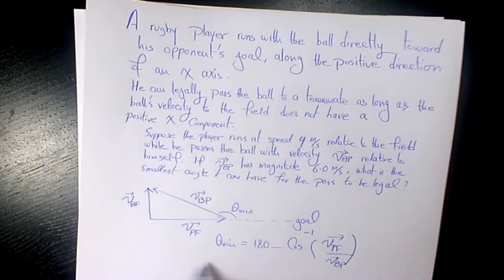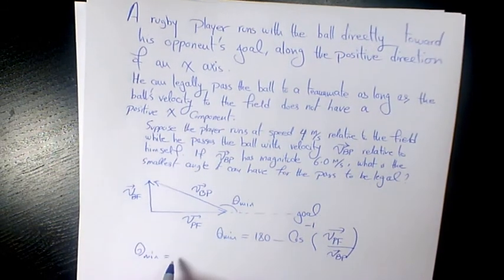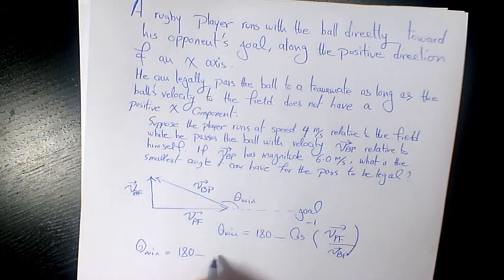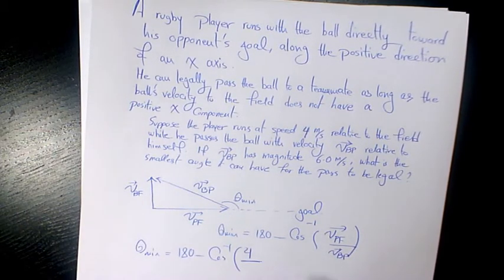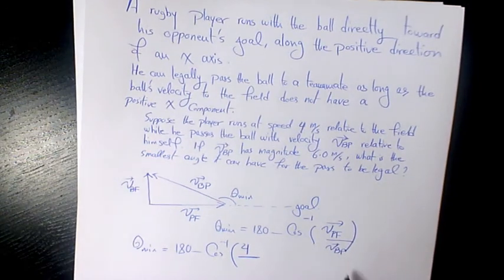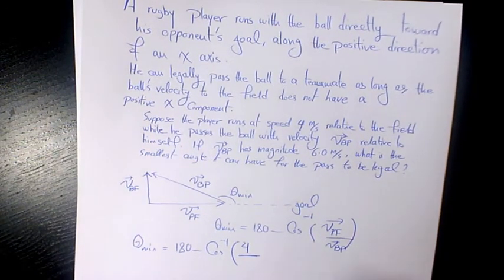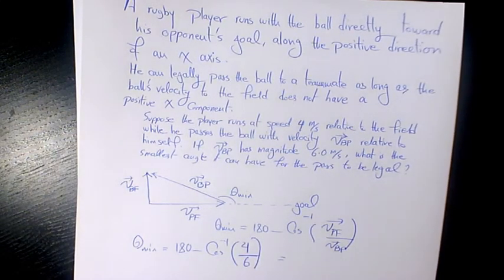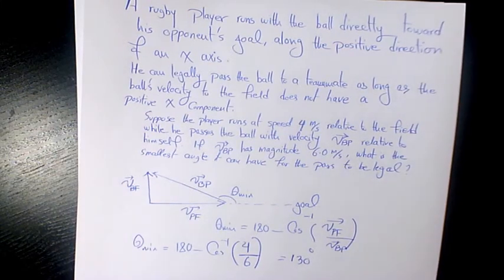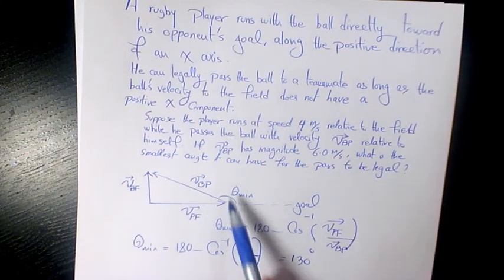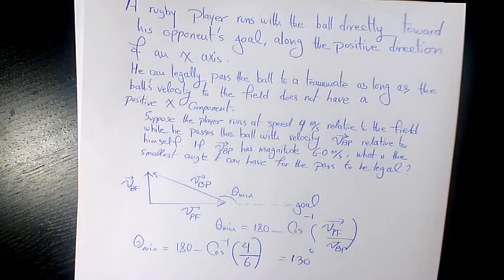So theta minimum equals 180 minus cosine inverse of the velocity of the player with respect to the field — 4 meters per second — divided by the velocity of the ball with respect to the player, which is 6 meters per second. That gives us 4/6 = 2/3, and cosine inverse of 2/3 gives approximately 130 degrees. So theta minimum is 130 degrees — that's the final answer.